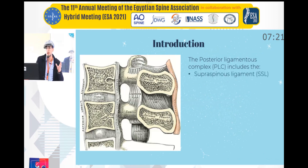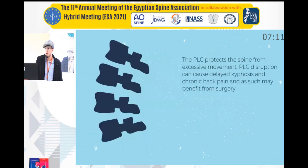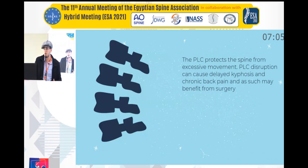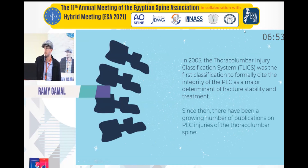The posterior ligamentous complex (PLC) is a complex of ligaments that includes the supraspinous ligament, the interspinous ligament, the ligamentum flavum, and the facet capsular ligament. The PLC protects the spine from excessive movement, and as such its disruption can cause delayed kyphosis, chronic back pain, and it may benefit from surgery when injured.